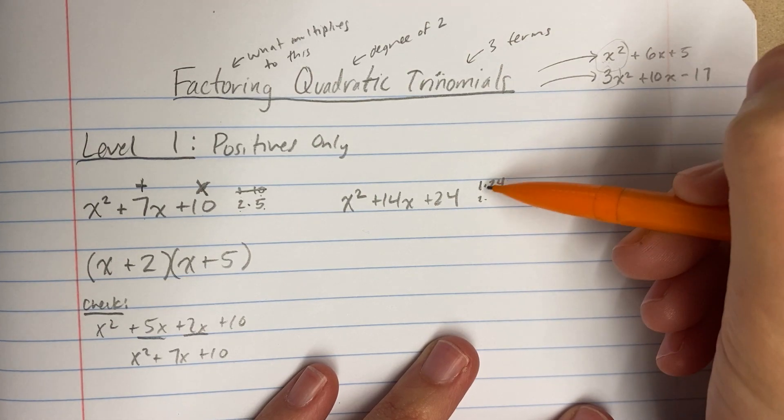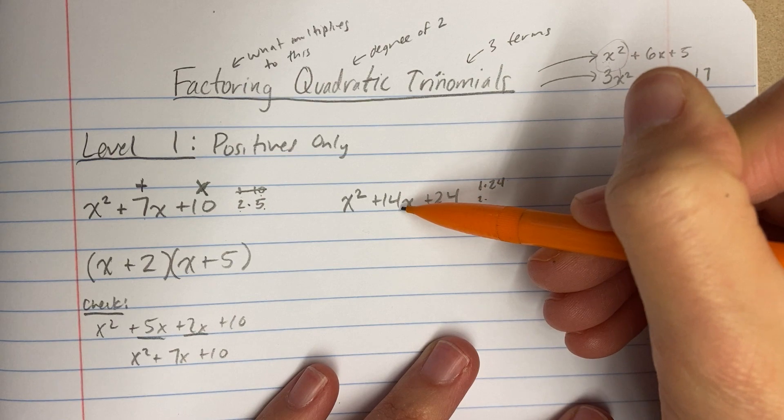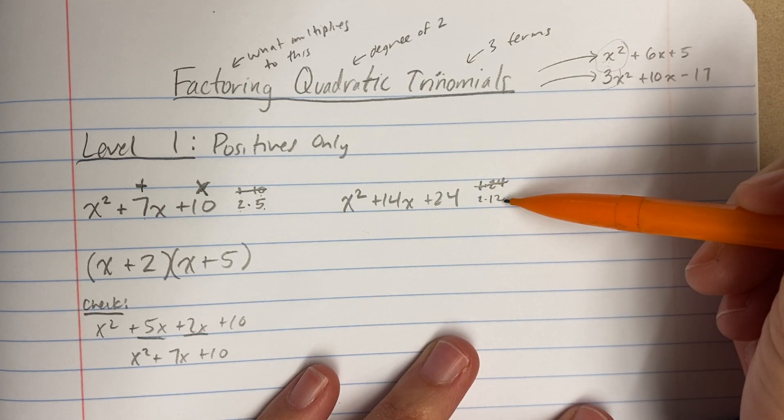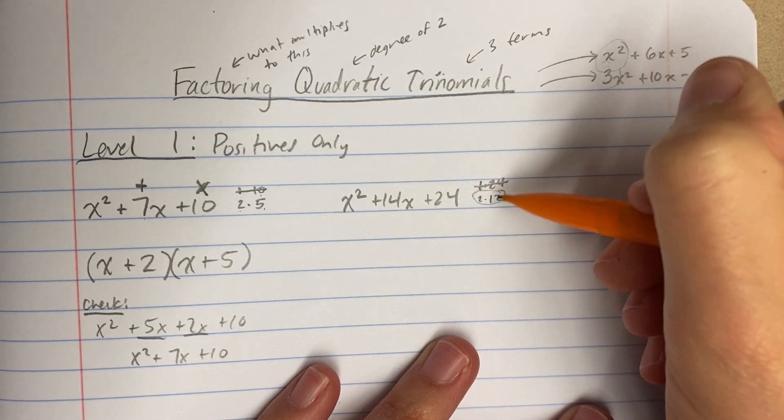1 times 24. That equals 24. Is 1 plus 24 14? No. 2 times 12. That equals 24. Is 2 plus 12 14? Yes. And I'm done.